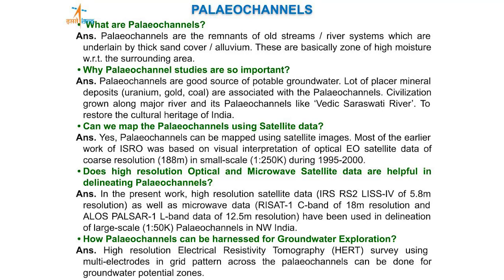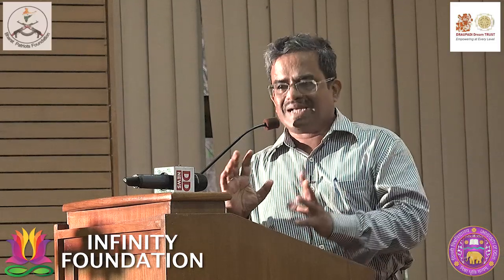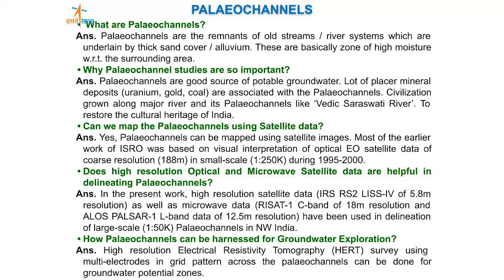Paleo channels can be detected through satellite images — through both optical and microwave data. Optical means detecting in the optical wavelength range. Microwave has the advantage that it can penetrate the ground surface, though limited to about 5 meters. But that 5 meters of moisture content, if expressed on the surface, is what we are interested in highlighting using optical and microwave data. Furthermore, to assess what depth and quantity of water is available, high-resolution electrical survey — called high-resolution tomography — can be generated. So the workflow is: take satellite image, do interpretation, take all ground information, do survey, and determine water quantity and depth.